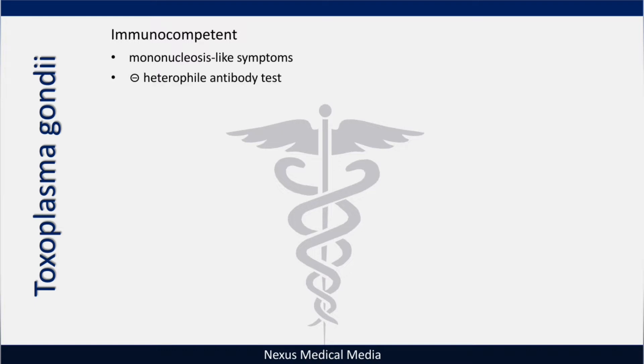If you test using the heterophile antibody test, it will be negative. In actual mono caused by Epstein-Barr virus, the heterophile antibody test is positive. But in toxoplasma it will be negative, even though the patient will have similar mono-like symptoms.